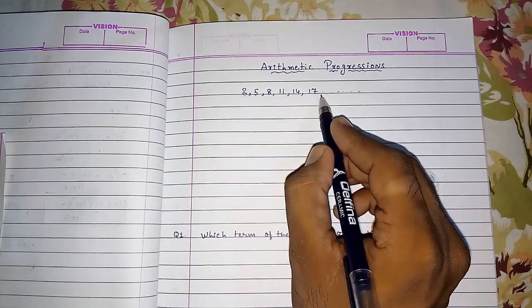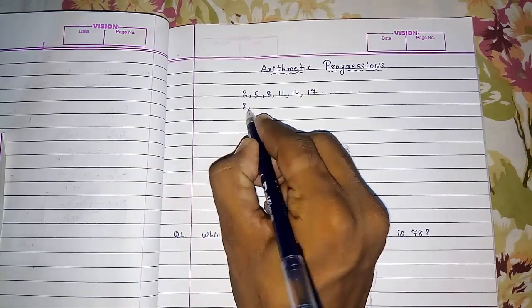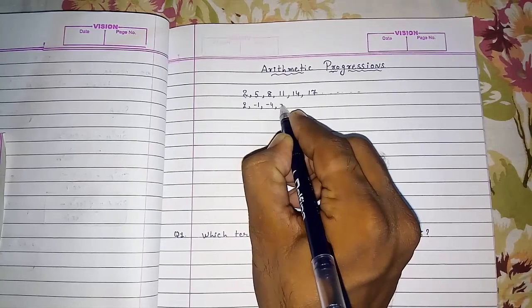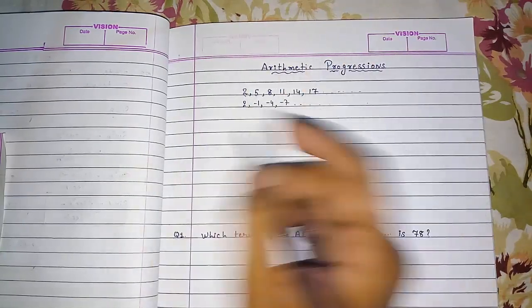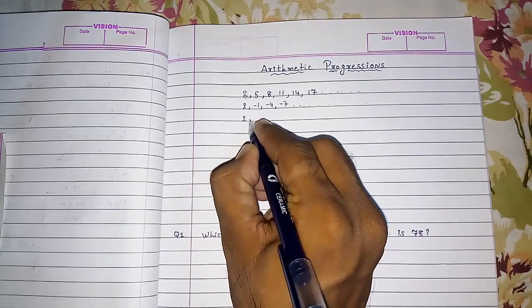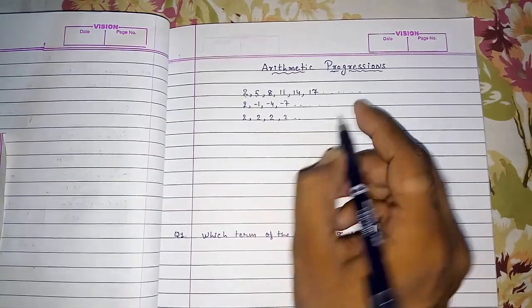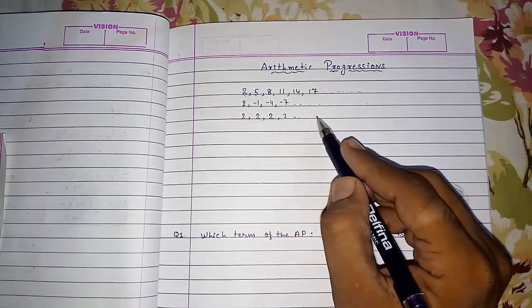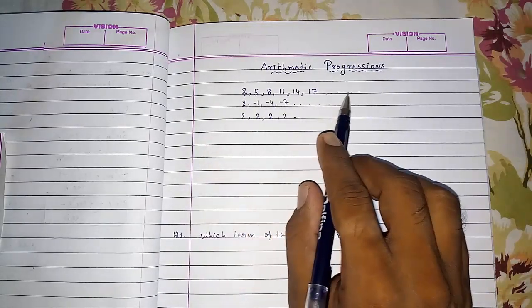Progress can be positive also. It can be negative also. 2, minus 1, minus 4, minus 7 and so on. It can be 0 also. 2, 2, 2, 2. This is also an AP. Progress can be positive, it can be negative or it can be 0 also. But it should be same in the order.